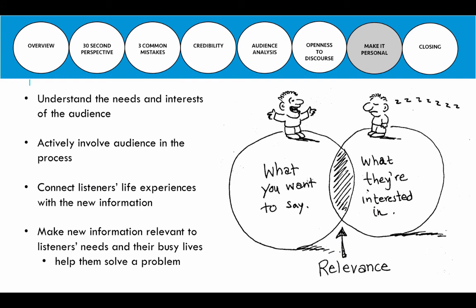Lastly, make it personal. If you understand the needs and interests of the audience and actively involve them in that process, you can connect their life experiences with new information. If you can show them how their life can be better if they adopt a new value system, a new belief, or a change in behavior or attitudes — showing them the benefit they will have in their own life — then you're much more likely to affect change. Make the information relevant to their needs, show them the problem, show them why they need to change, and help them get there.